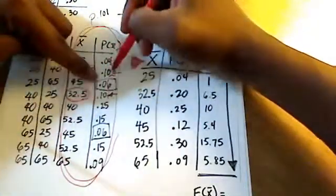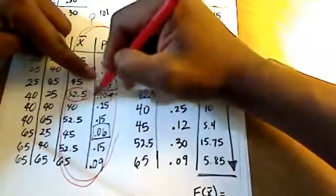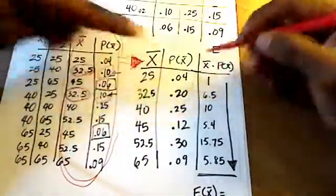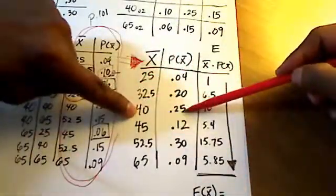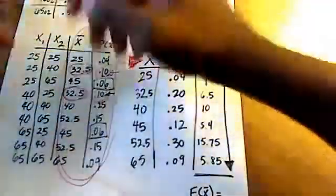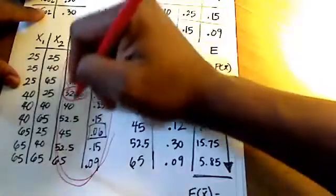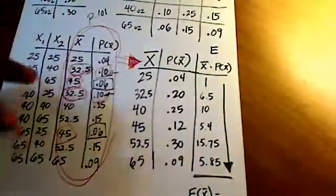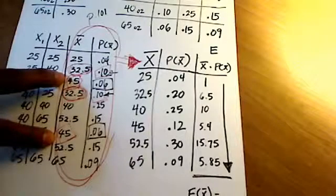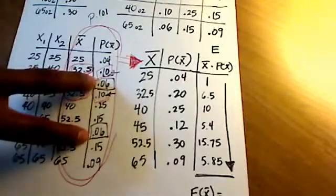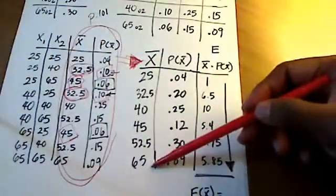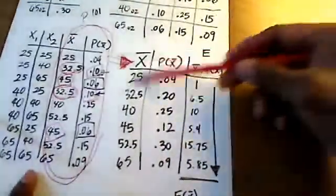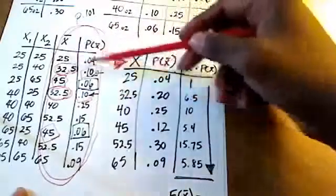If I add those up, the 0.10 here and the 0.10 here, I'm getting 0.20. You guys see how that works? Similarly, 40 only showed up once, there it is: 0.25. 45 showed up twice, didn't it? 45 showed up twice, here it is, and there it is. So 45 is showing up twice, each time with a probability of 0.06, so if I add those up I get 0.12, etc. 65 only showed up once, there it is at the bottom, and it has a probability of 0.09. So this is a truncated, shorter version of this table over here.